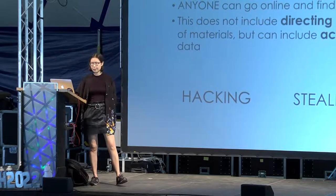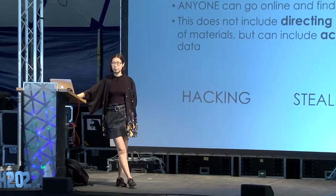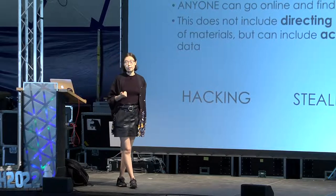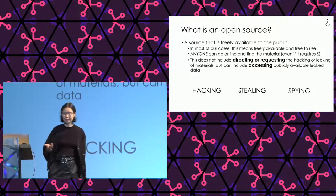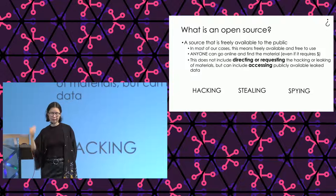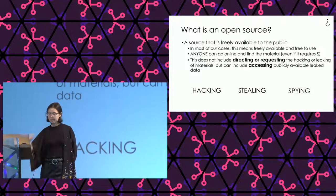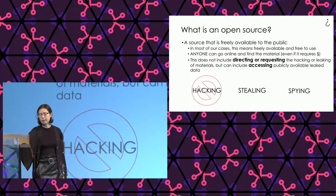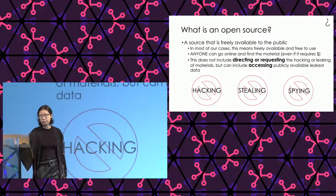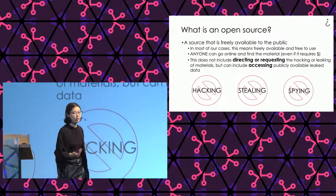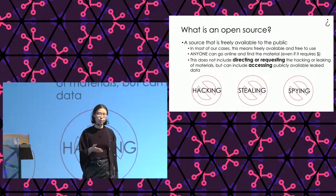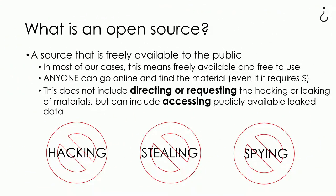To summarize: open source is a source freely available to the public, which can include a paywall, but in most cases we use free tools. This does not include directing or requesting hacking, stealing, or spying — but it can include accessing publicly available leaked data. We'd never ask a hacker to compromise someone, but if a hacker has already leaked information, we might use it.